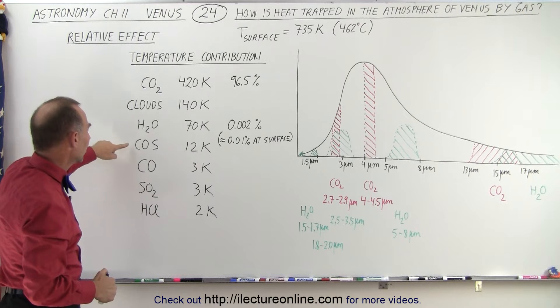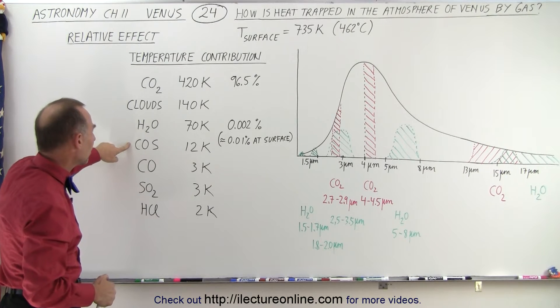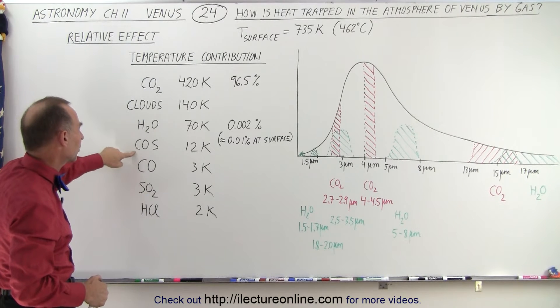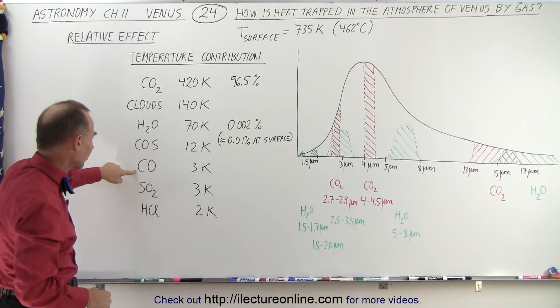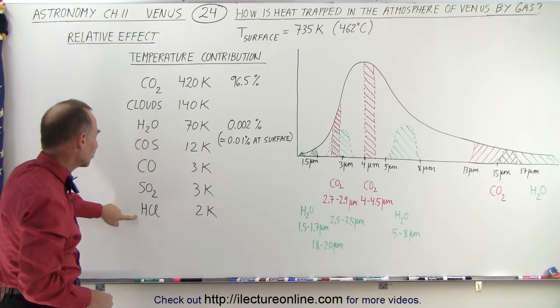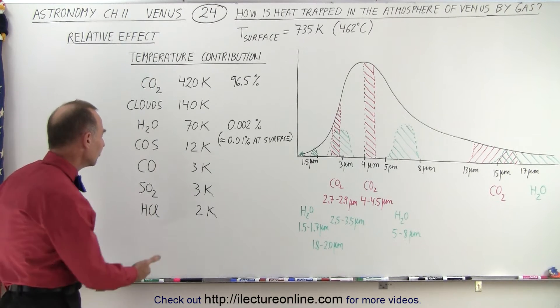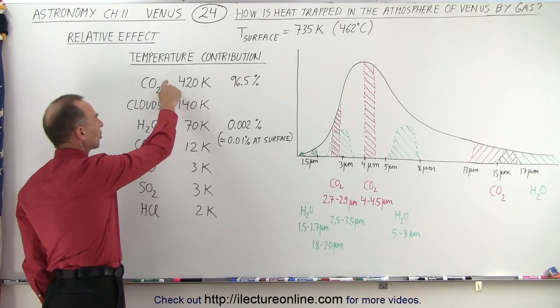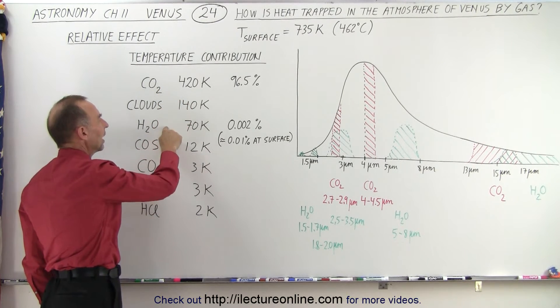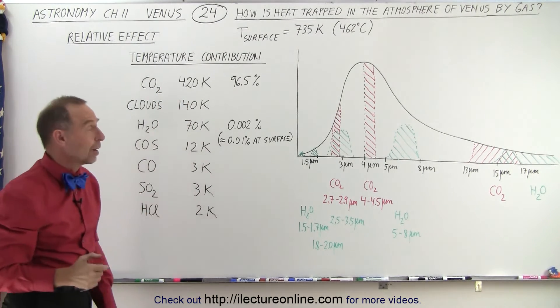Notice we have COS, that's a combination of carbon monoxide and sulfide, that causes a small increase in temperature. We have carbon monoxide, sulfide oxide, and hydrochloric acid, probably in vapor form. And so notice that the main contributors are carbon dioxide, cloud cover, and water vapor.